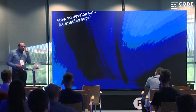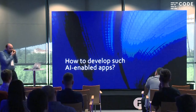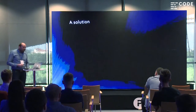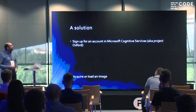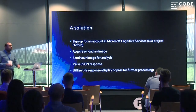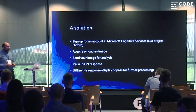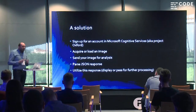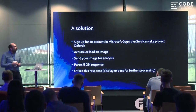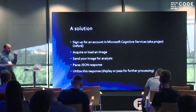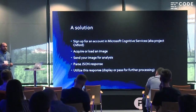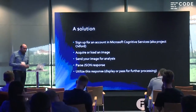The question is, how do you build such AI-enabled apps? The solution is pretty straightforward. You first sign up for a free account in Microsoft Cognitive Services, also known as Project Oxford. Then you need to acquire or load an image, send it to the AI-enabled service for analysis, parse the response, and then you can further utilize this response for further processing.